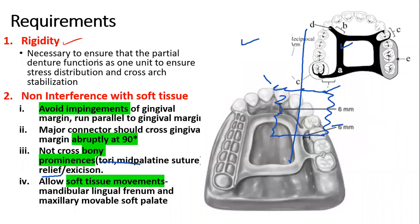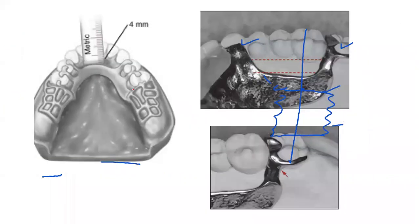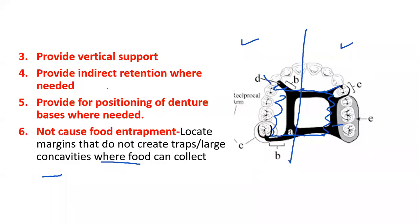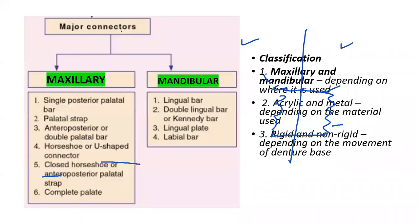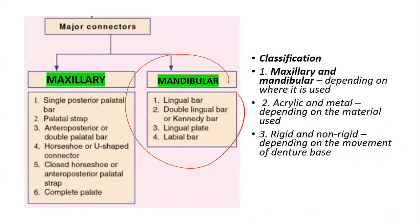We had studied the functions and requirements, which were rigidity, non-interference with soft tissue, vertical support, indirect retention, positioning of denture base, and patient comfort. Starting with the mandibular major connectors, there are basically four main types: the lingual bar, the lingual plate, the double lingual bar, and the labial bar.